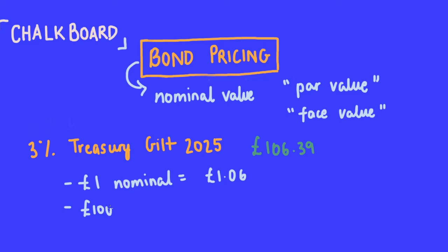If you hold a thousand pounds nominal, you simply multiply: the value would be one thousand and sixty-three pounds and ninety pence. Quick recap — the value of a holding is calculated by converting it into price per pound nominal of stock.